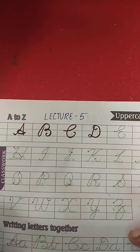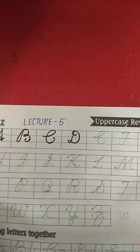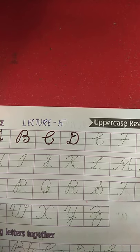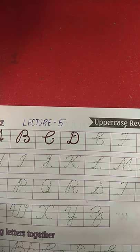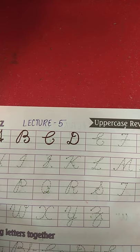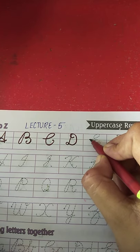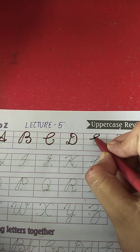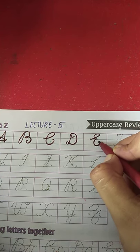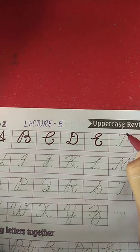D for duck ke baad kaunsa letter aata hai? E — E for elephant. What is the spelling of elephant? E-L-E-P-H-A-N-T. Elephant. Now put your pencil on the dot and draw a curve, then a semicircle, one more semicircle to the blue line and stop here. This is letter E — E for elephant.